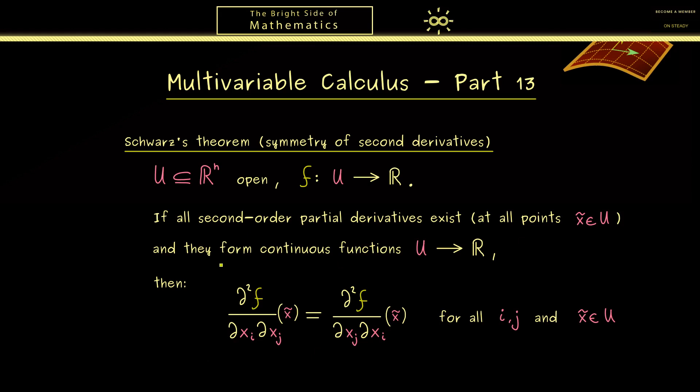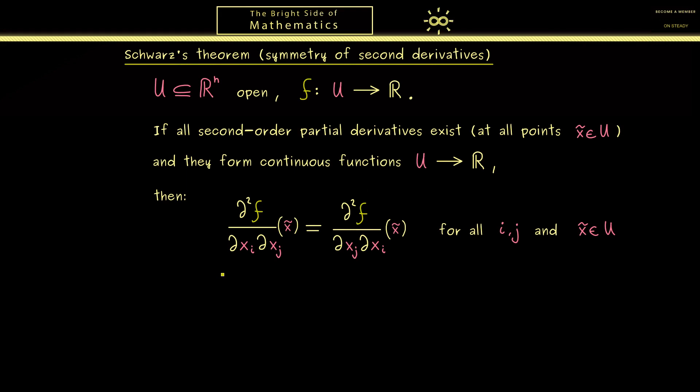This is a very important result because it reduces the number of second order partial derivatives we need to calculate. By induction you can also apply this fact to higher order partial derivatives, so this helps whenever we need to compute many higher order partial derivatives. We already saw an example of this in the last video, so here I want to concentrate on the proof. The crucial part is that we use partial derivatives, which are essentially one-dimensional derivatives, allowing us to apply the ordinary mean value theorem.